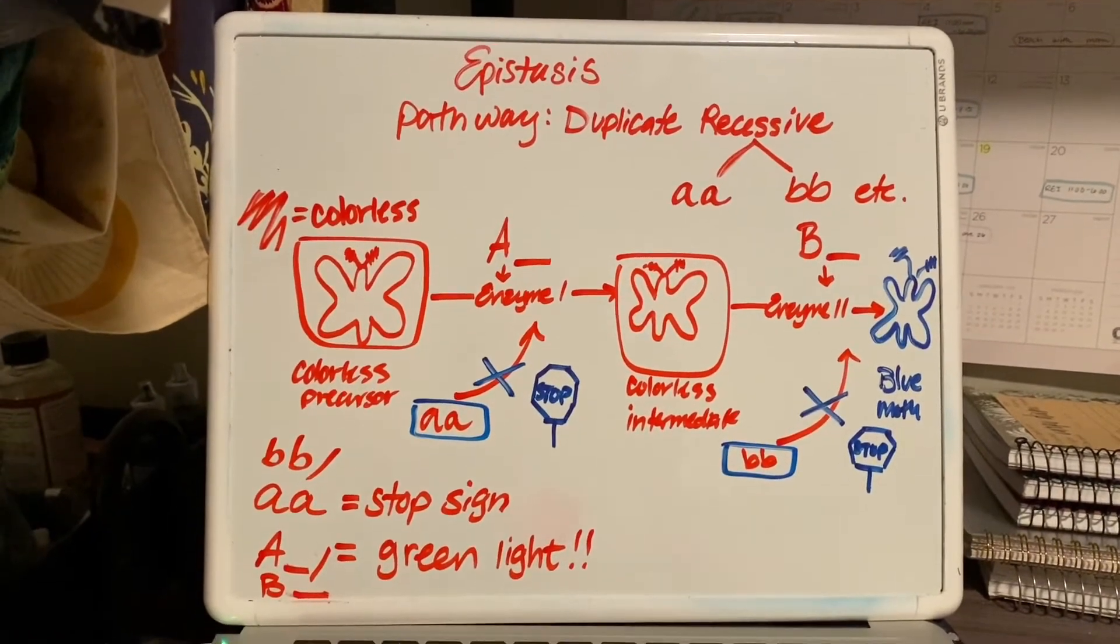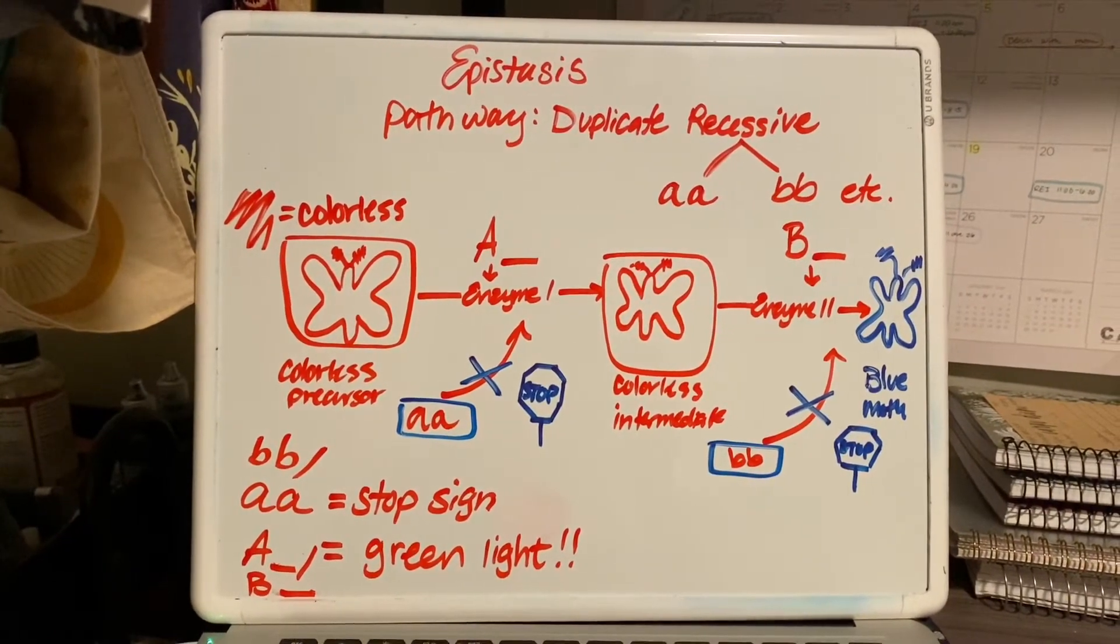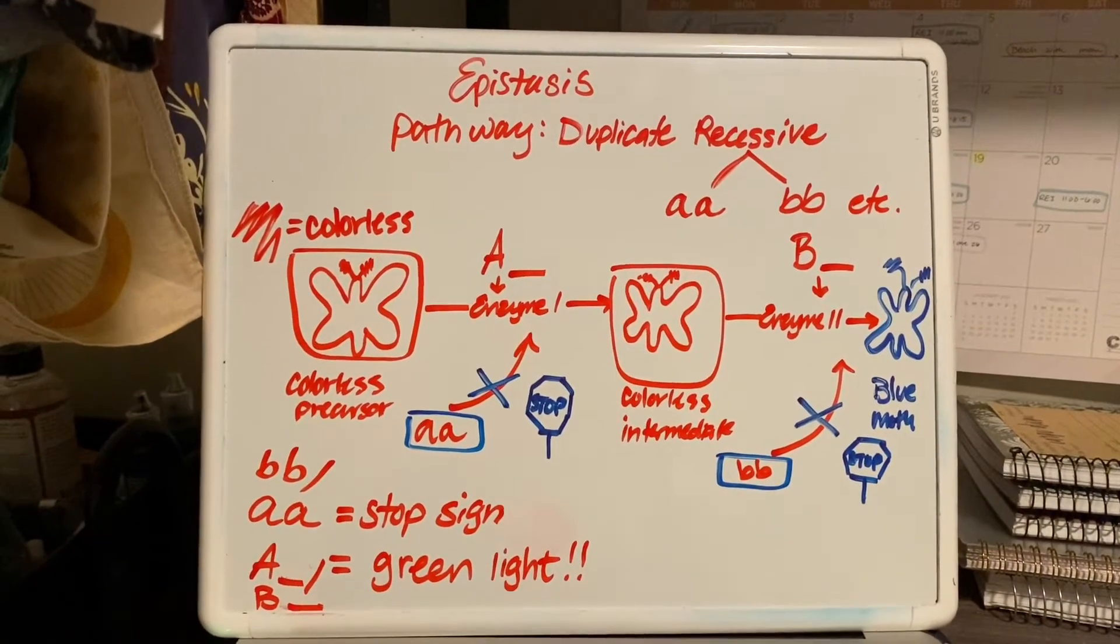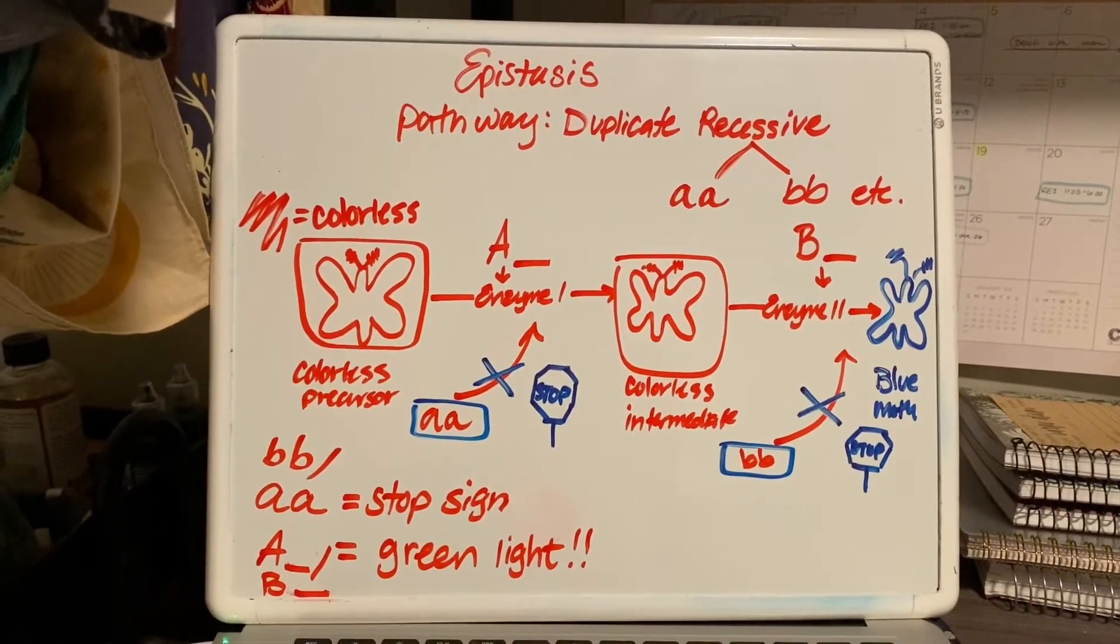So pretending like the red marker is actually colorless, we start with a colorless precursor, which is our colorless moth.